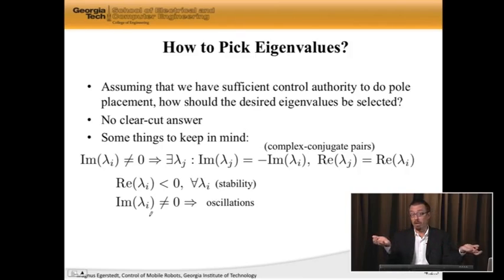If that's something we'd like, typically we don't. If we don't like oscillations, the eigenvalues we pick are all real. If we're wanting oscillations, we have to introduce imaginary parts.